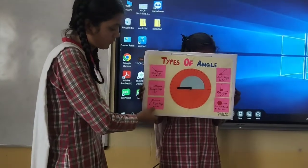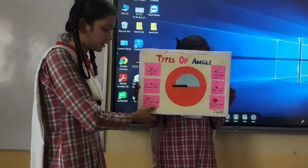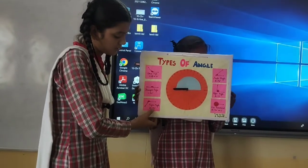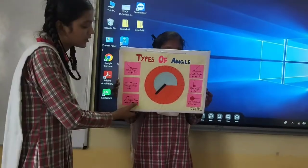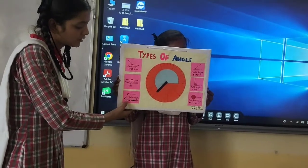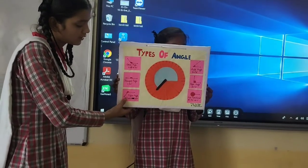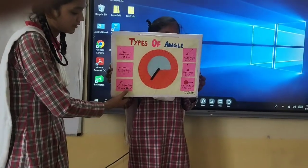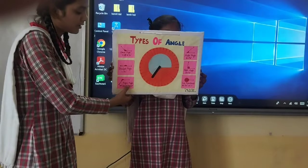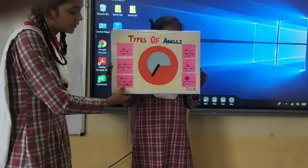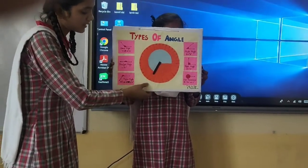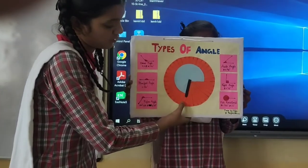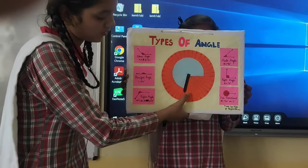The fifth is the reflex angle — the angle which is more than 180 degrees and less than 270 degrees. For example, 250 degrees is a reflex angle.